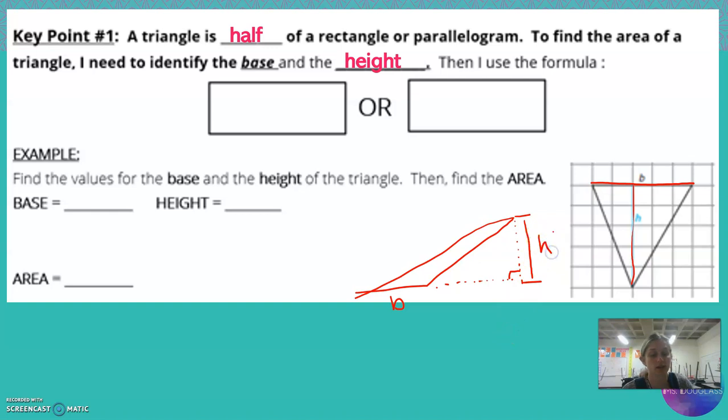But our two area formulas are area is base times height, and then cut it in half, or area is base times height divided by 2. So times a half or divided by 2, same thing, you'll get your area for the triangle.